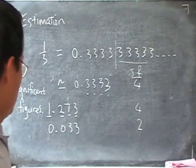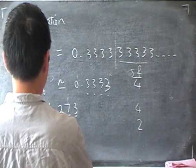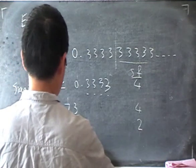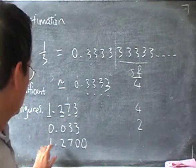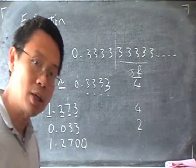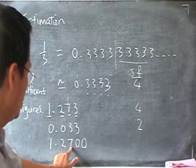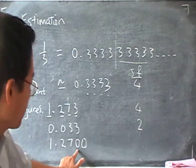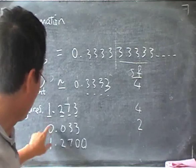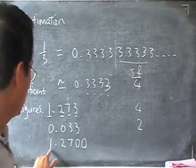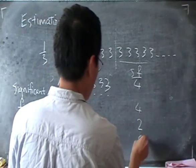Another example: what if I have 1.2700? How many significant figures are there? I start from the left, and 1 is not zero, so I start counting: 1 as a figure, so 1, 2, 3, and then I see a zero. Do I count that zero? Yes — you count everything after the first digit that is not zero. So I count 1, 2, 3, 4, 5. I include both zeros at the end. So this would be five significant figures.